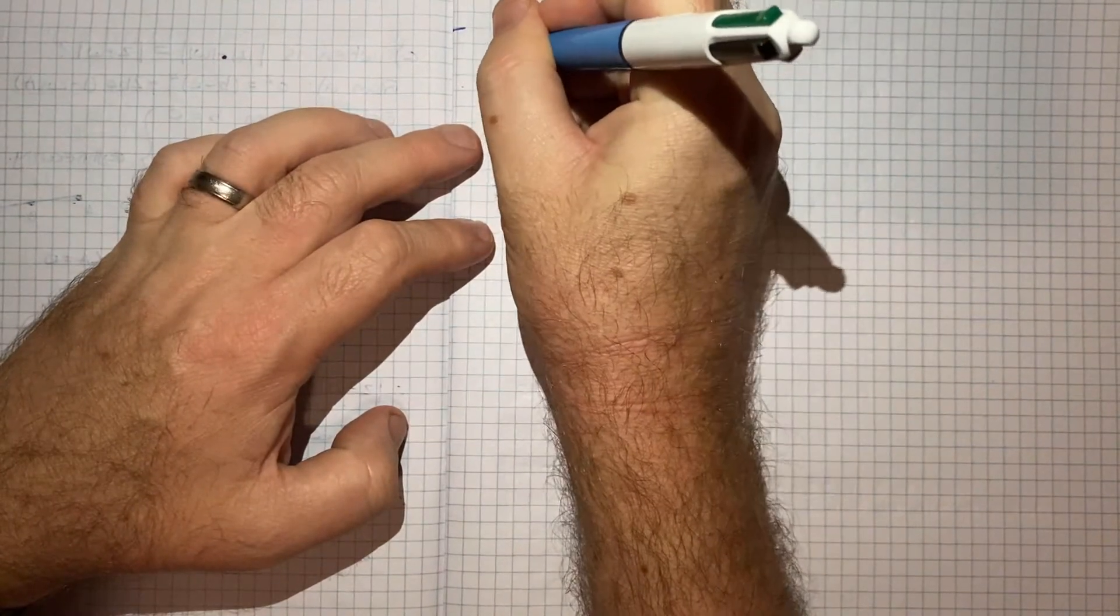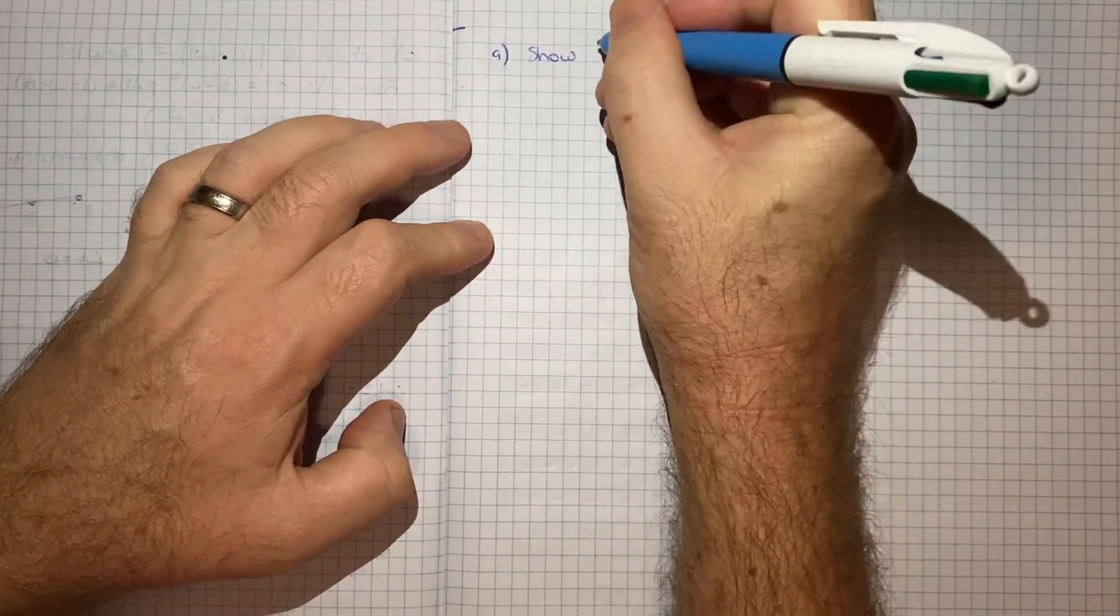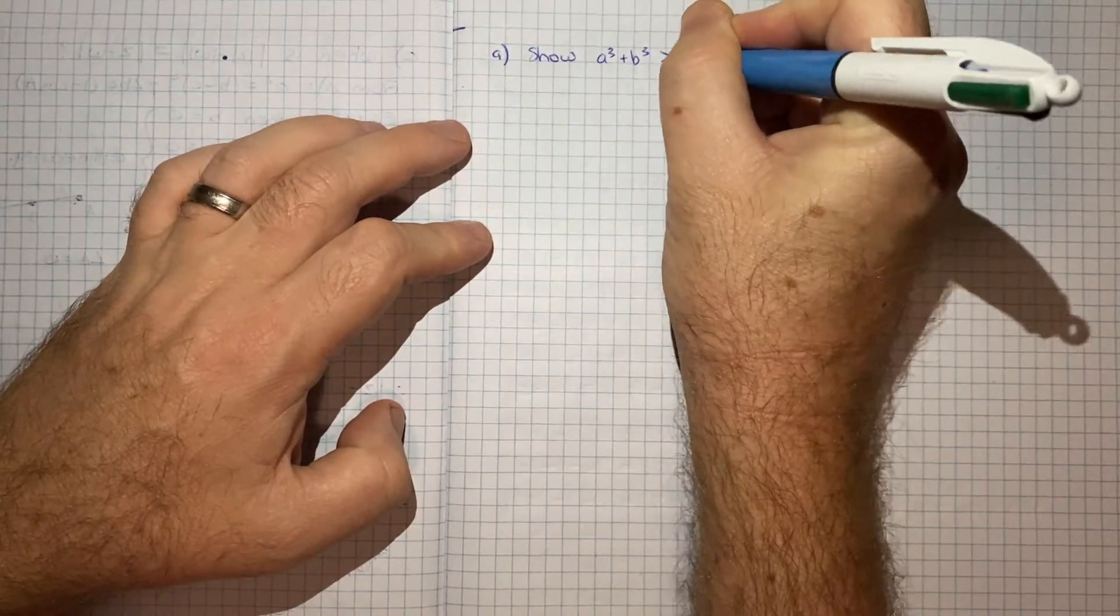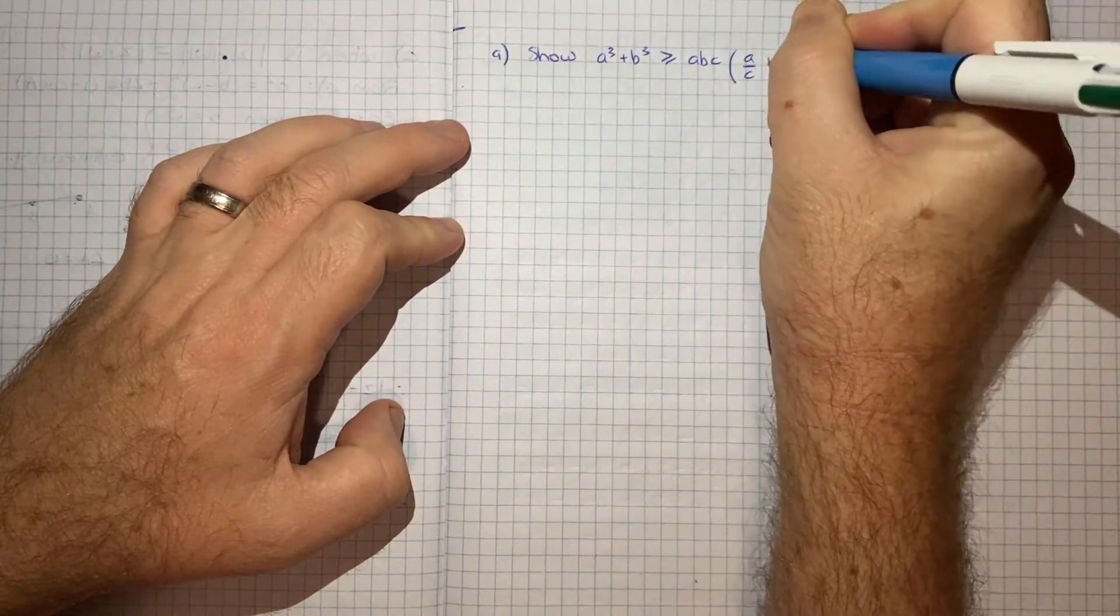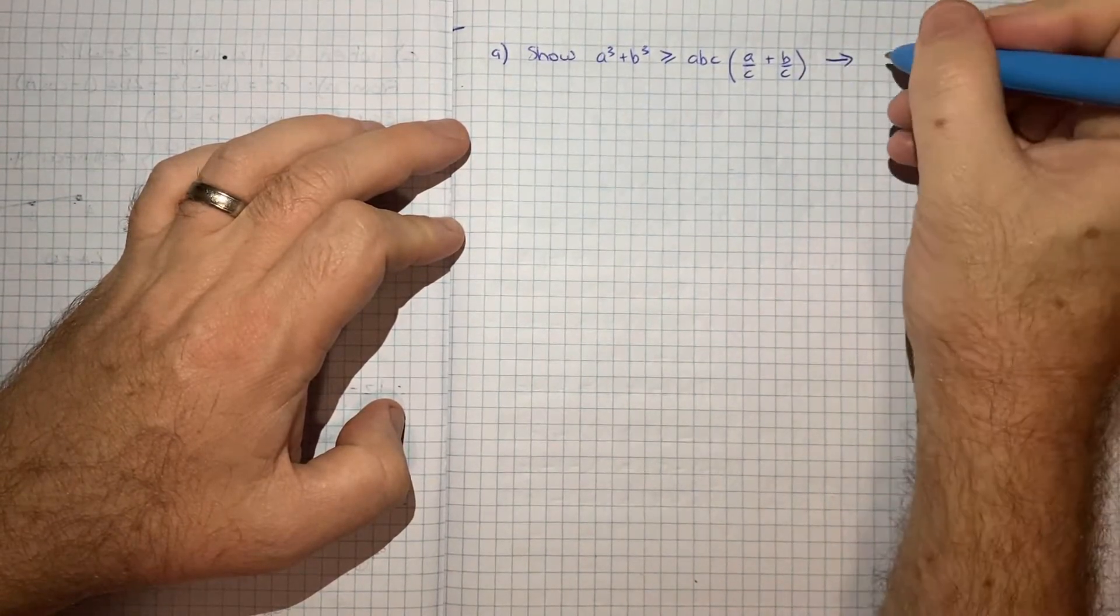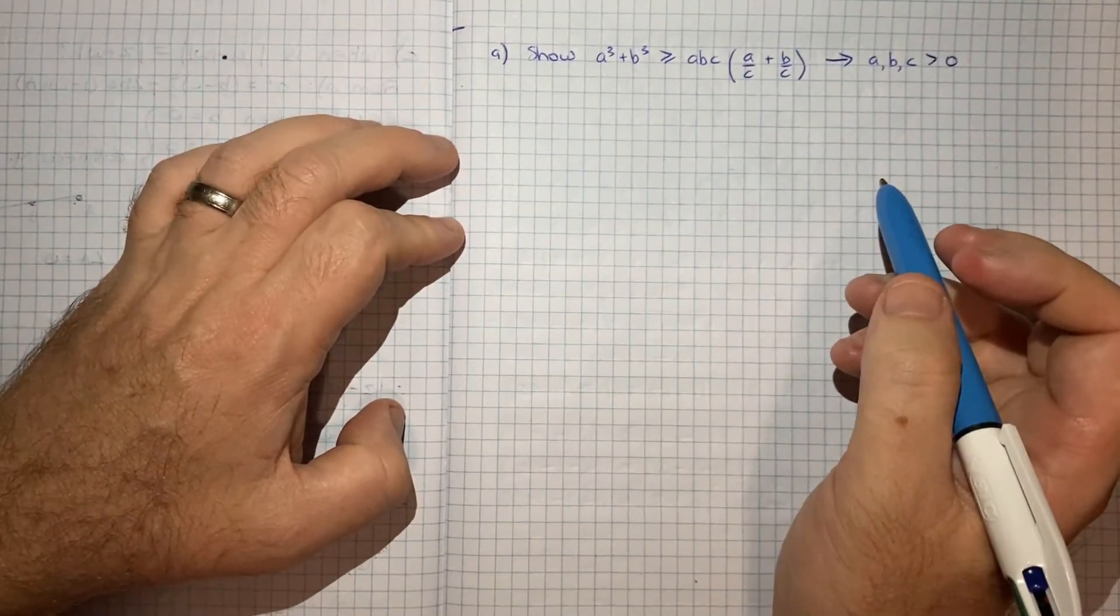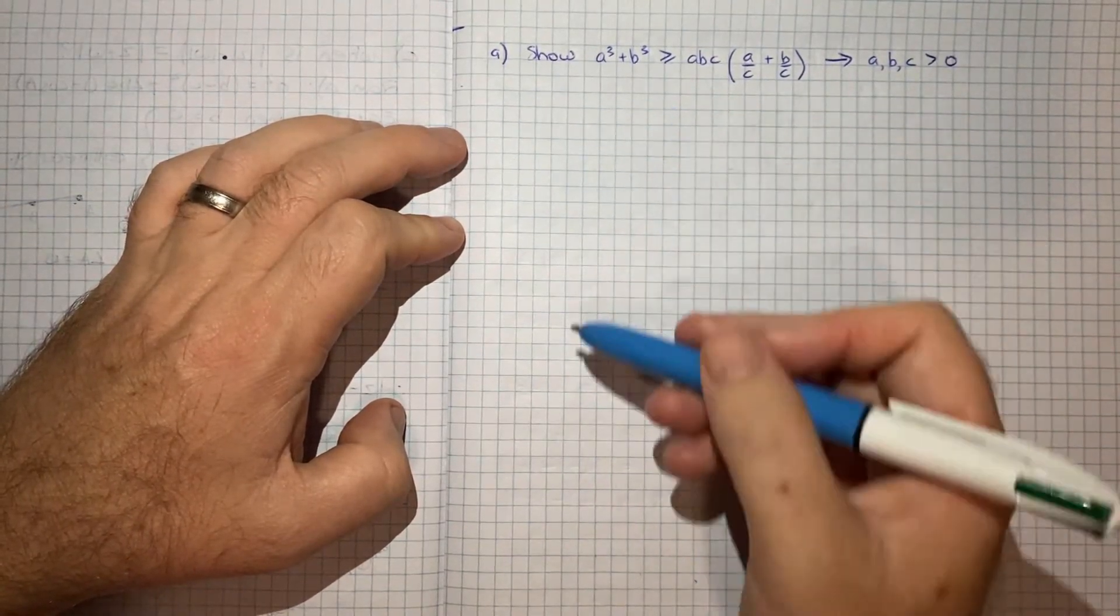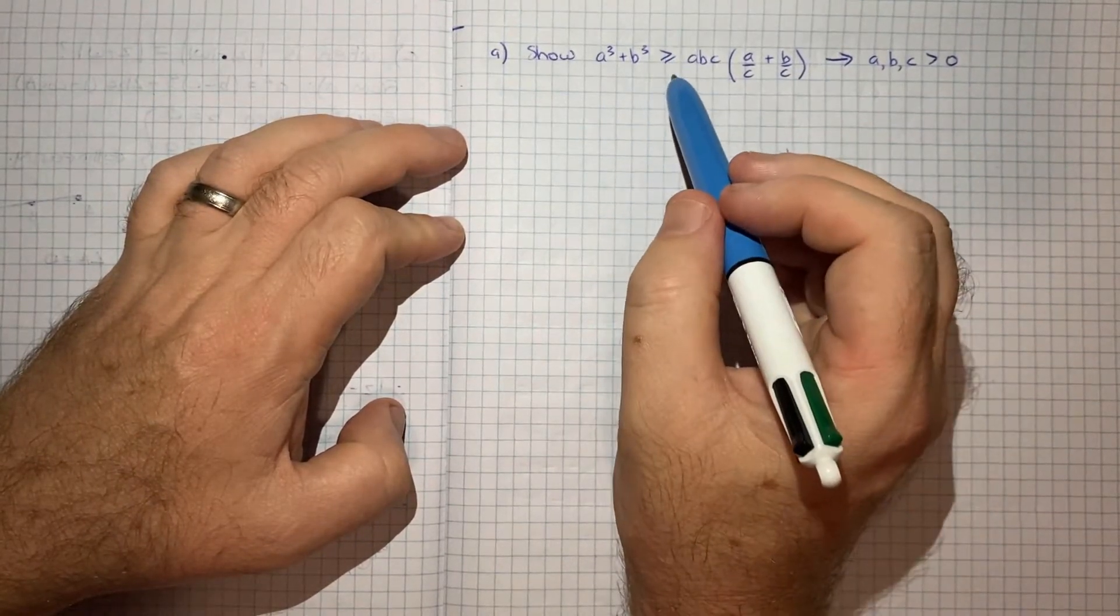So for this part a, let's just note what we're being asked to show. So we want to see a cubed plus b cubed being greater than or equal to abc times a on c plus b on c. And remembering this is all starting from the point that a, b, and c are all greater than zero.